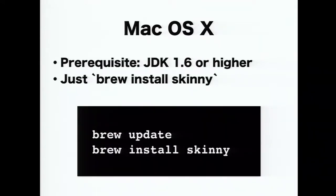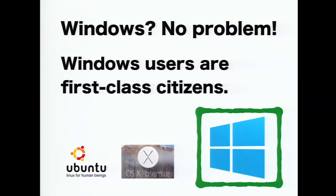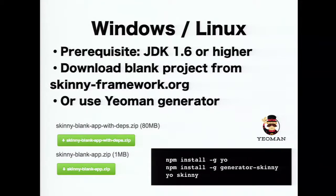The installation is very easy. If you are a Mac user, you can use Homebrew to install the Skinny script — just brew install skinny. The only requirement is JDK. If you are a Windows user, there's no problem — Windows users are also first-class citizens of Skinny, unlike in the Rails world where it's too difficult. If you're using Windows or Linux, download the blank application zip file, or if you're familiar with Yeoman, you can use the Yeoman generator.